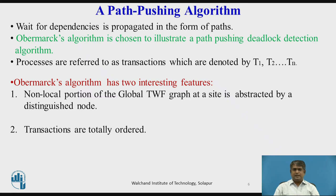Overmark's algorithm has an interesting feature: the non-local portion of the global transaction wait-for graph at a site is abstracted by a distinguished node called the external node, denoted as EX, which helps in determining potential multi-site deadlocks without requiring a huge global transaction wait-for graph to be stored at a site.